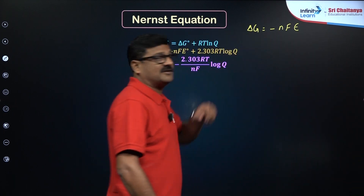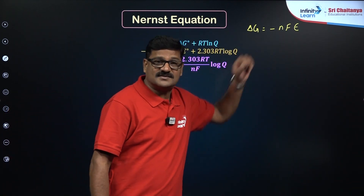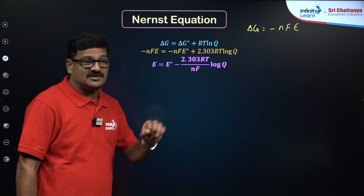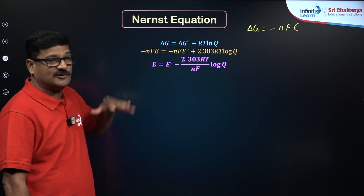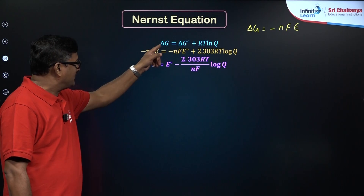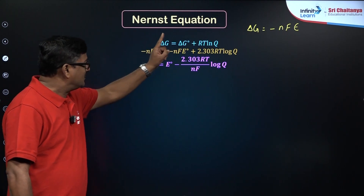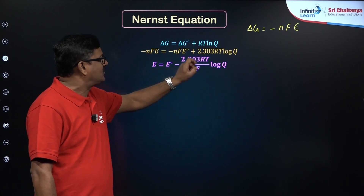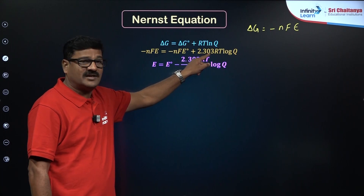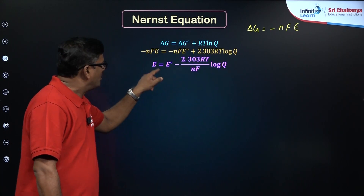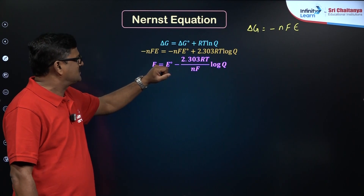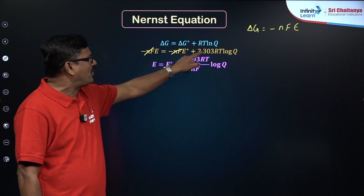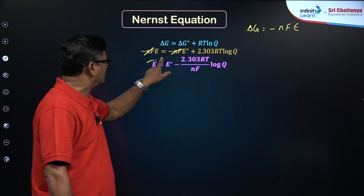Here, n is the number of electrons involved, F is the Faraday constant (96500 C/mol), and E is the cell potential. Substituting ΔG = -nFE and ΔG° = -nFE°, and converting ln Q to 2.303 log Q, then dividing through by nF, we get: E_cell = E° - (2.303RT / nF) log Q.